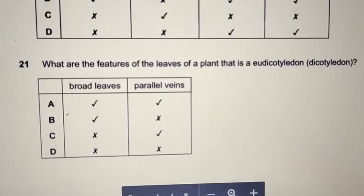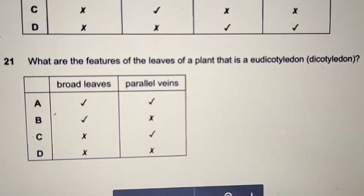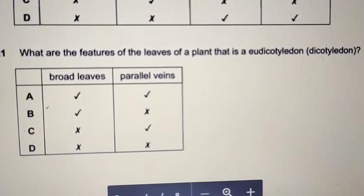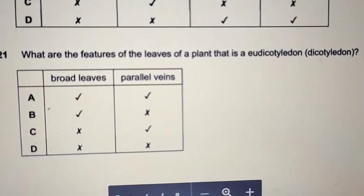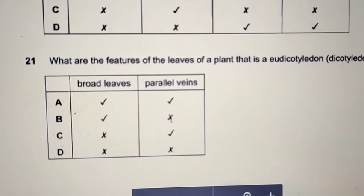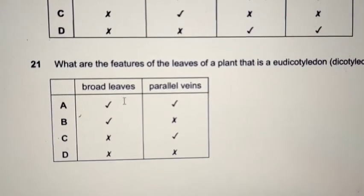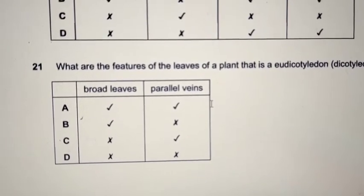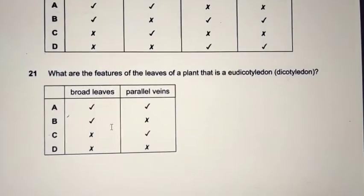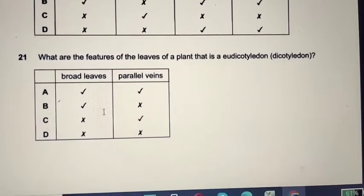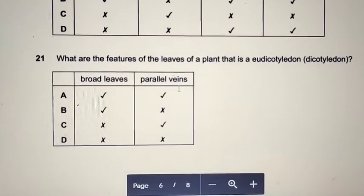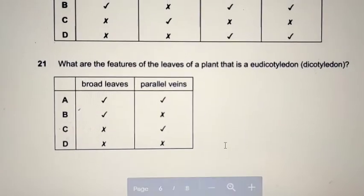Question 21: what are the features of the leaves of a dicotyledon plant? Dicot leaves have broad leaves and veins that branch from one point — not parallel. Parallel veins belong to monocots like maize. So the answer is B: broad leaf, non-parallel veins.